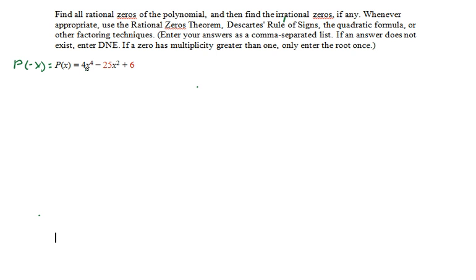We see that there are two sign changes in the coefficients, so there are two positive reals maximum as well as two negative reals possible.